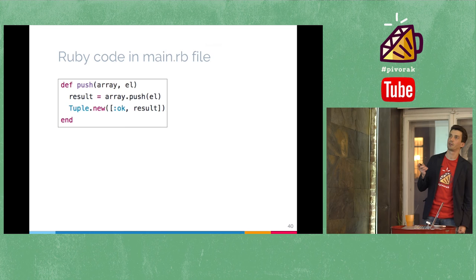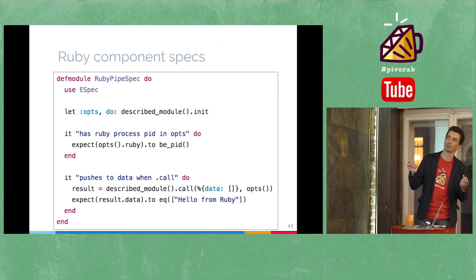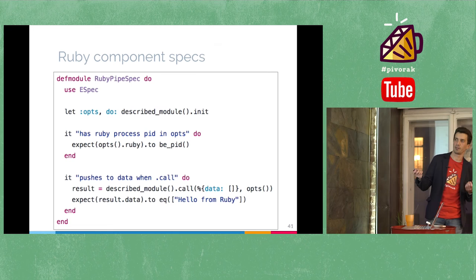Testing of the component is also very easy — we only need to test two functions. We test that when we init our module we have a Ruby process PID, and when we call that module with an empty array, we expect that the resulting data will have one element: 'hello from Ruby'. The component is very simple.